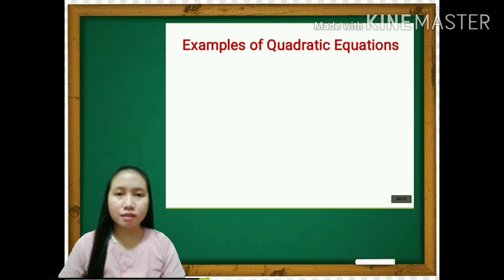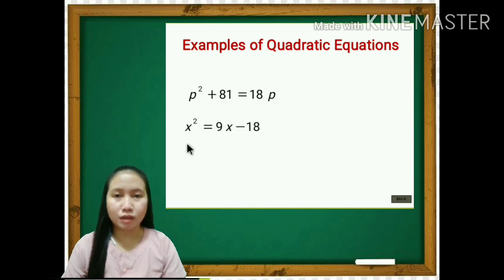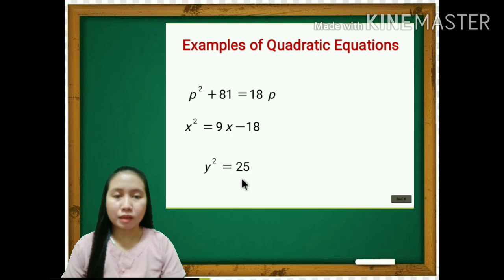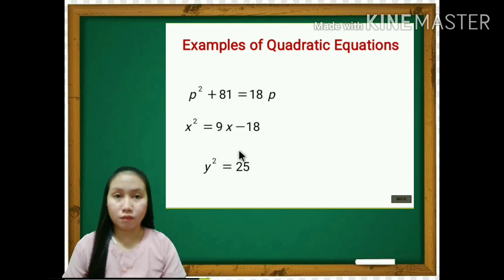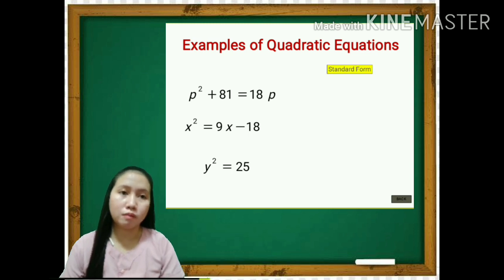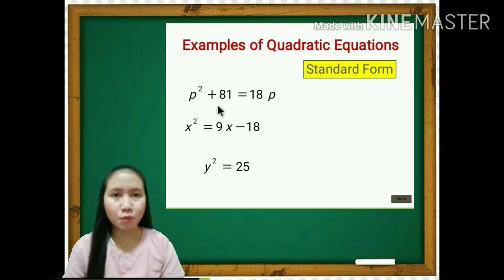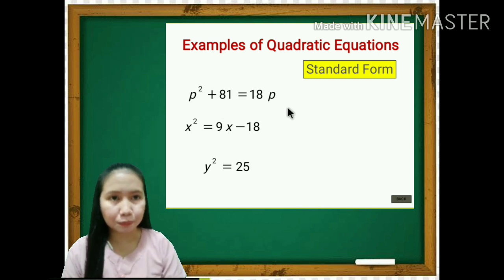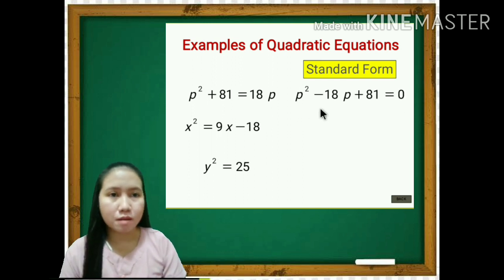Here are examples of quadratic equations. We have p squared plus 81 is equal to 18p; x squared is equal to 9x minus 18; and y squared is equal to 25. These are quadratic equations but not yet in standard form, so we're going to transform them. The first one, p squared plus 81 equals 18p — we subtract both sides by 18p, giving p squared minus 18p plus 81 equals 0.